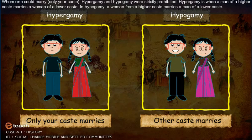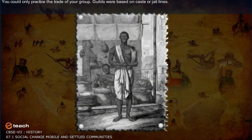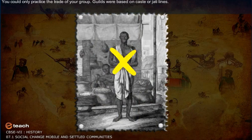The second regulation was whom one could marry — only within your caste. Hypergamy and hypogamy were strictly prohibited. Hypergamy is when a man of higher caste marries a woman of a lower caste; in hypogamy, a woman from a higher caste marries a man of a lower caste. The third regulation was that you could only practice the trade of your group, and guilds were based on caste or Jati lines.